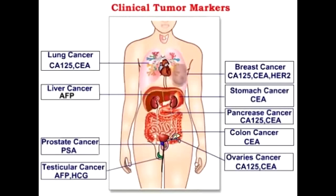What is alpha-fetoprotein? Alpha-fetoprotein is a major plasma protein produced by the yolk sac and liver during fetal development. Alpha-fetoprotein can be increased in cancers such as hepatocellular carcinoma, as well as non-seminomatous germ cell tumors of the ovary and testes.